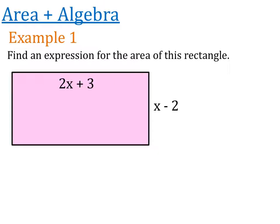So our first example today, now all of the questions we're going to look at today are going to be around grade 5 and 6. Alright, so our first example says find an expression for the area of this rectangle. So you can see in this rectangle we've got one side is 2x plus 3 and the other side is x minus 2, and we need to find an expression for the area of this particular rectangle.